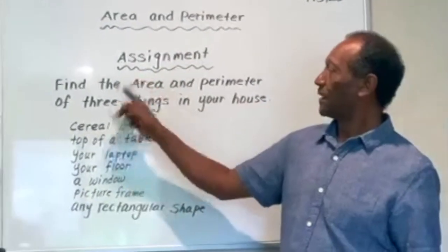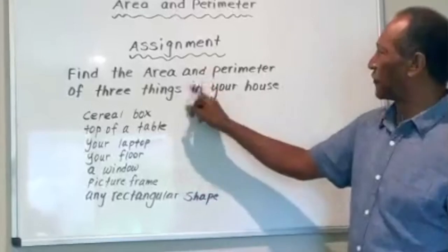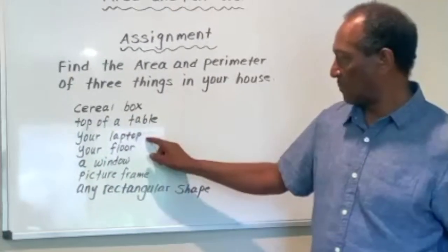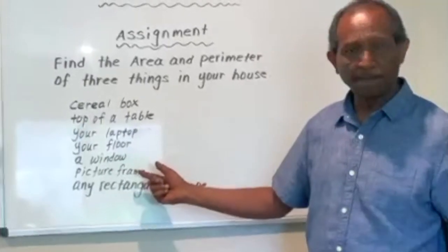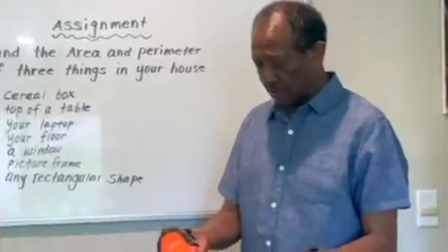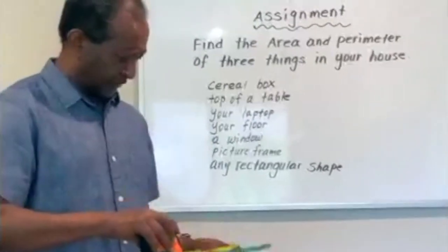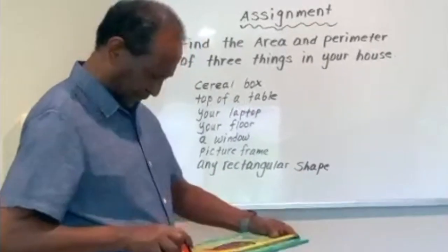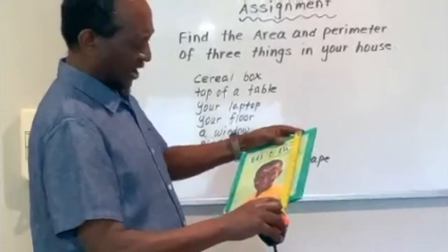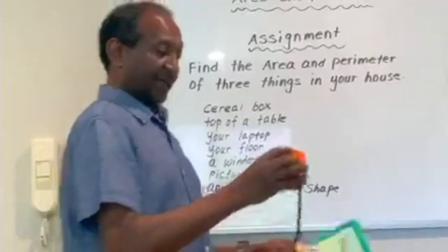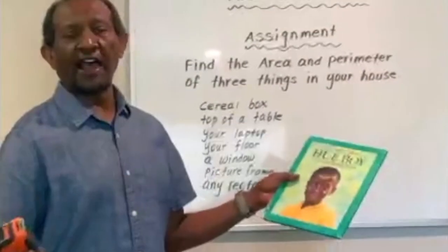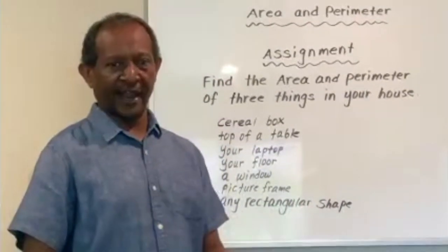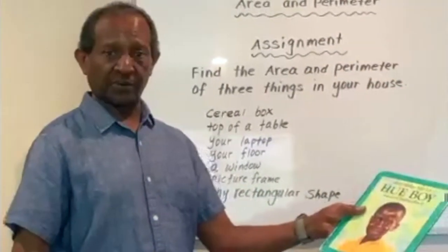This is an assignment for you. Find the area and perimeter of three things in your house — like a cereal box, top of a table, your laptop, your floor, a window, a picture frame, any rectangular shape. For example, this book — I'm going to measure it. The width is 9 inches, the length is 11 inches. So I can find the area: 11 times 9, or find the perimeter by adding 11 plus 9 plus 11 plus 9.